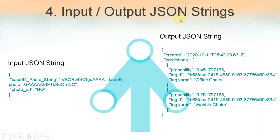Input and output JSON strings. On the left side you have the input JSON string which contains an input photo as a base64 encoded string or as a URL from the web. On the right side you have the output JSON string which contains predictions made with a certain probability score and tag name.